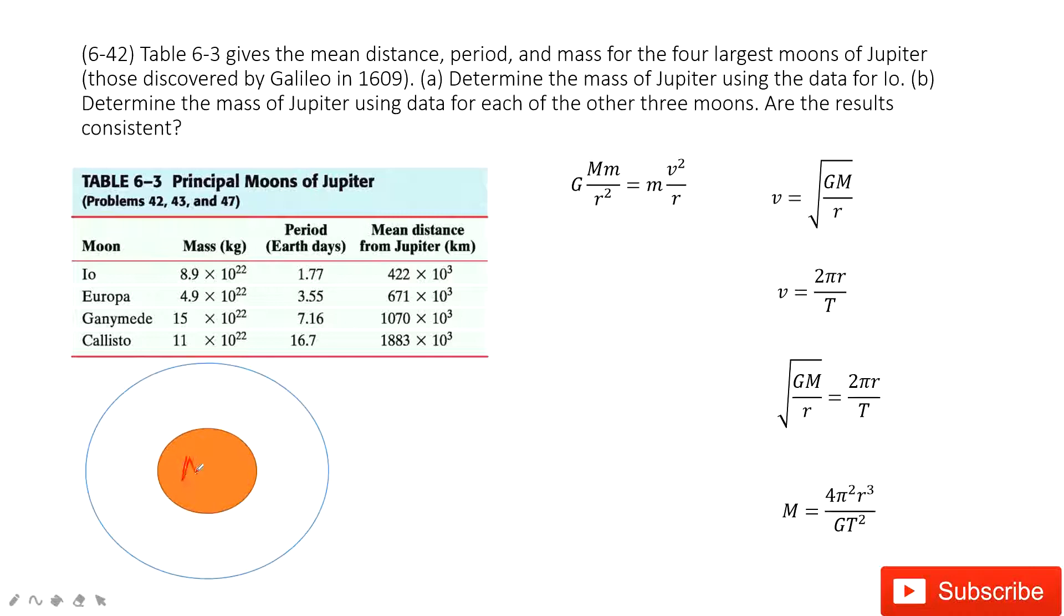So how can we decide this capital M? For this one, you can see this small m is given, and the period is given, and also the distance. We can consider the r is also given for these moons.